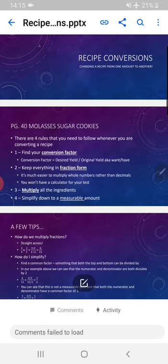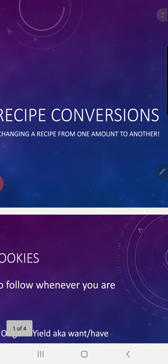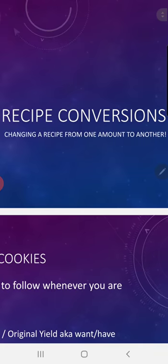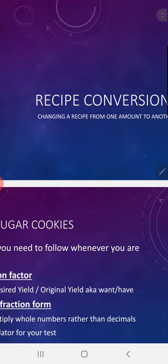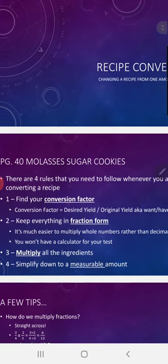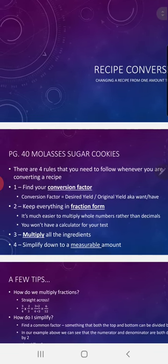Let's dive right in. Recipe conversions means we're going to change a recipe from one amount to another amount. Write these four rules on the bottom of your page 40. Number one: you're going to find your conversion factor.